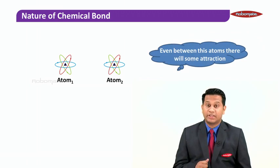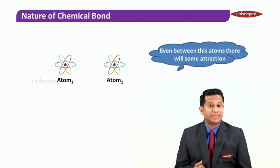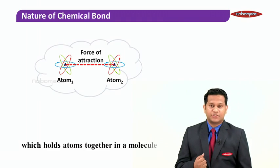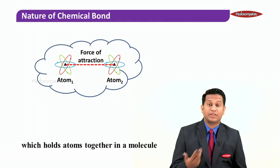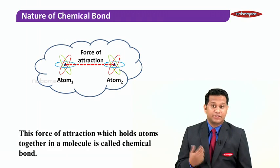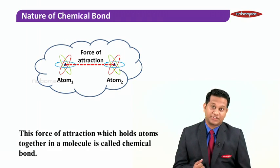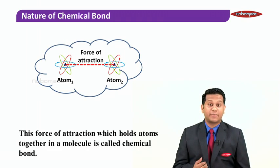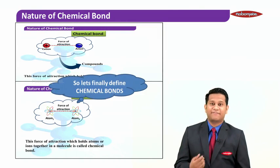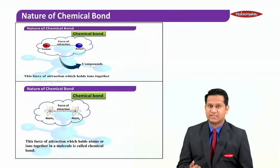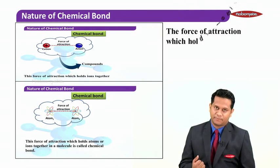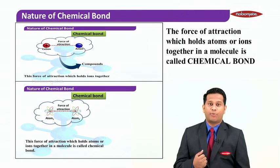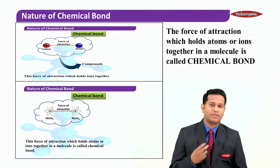Let us also consider two atoms: atom one and atom two. Even between these atoms there will be some attraction — a force of attraction — which is going to hold the atoms together in the molecule. This force of attraction which holds the atoms together in the molecule is called a chemical bond. So I can finally define chemical bond as: the force of attraction which holds atoms or ions together in a molecule is called the chemical bond.